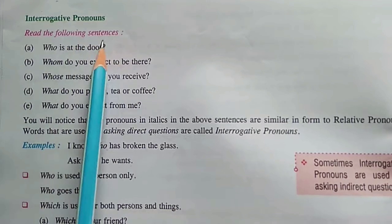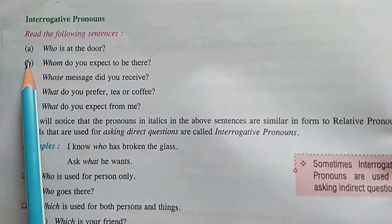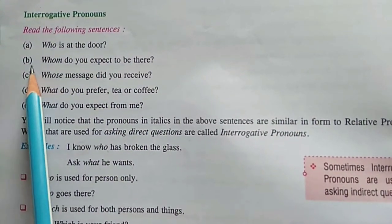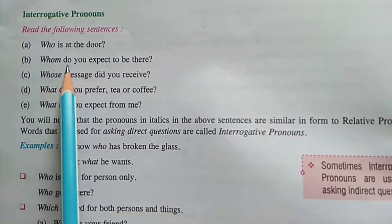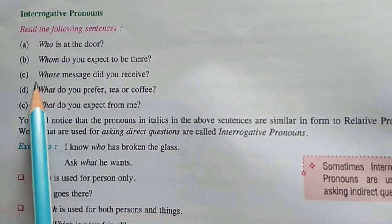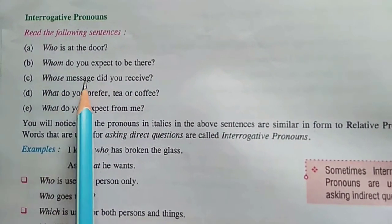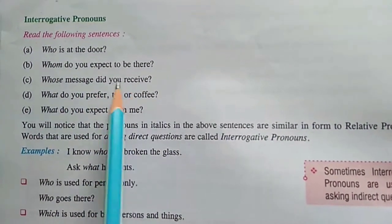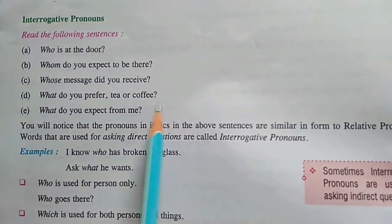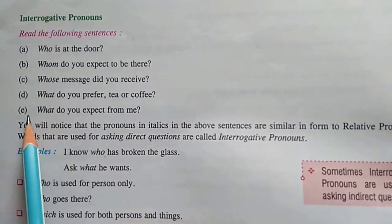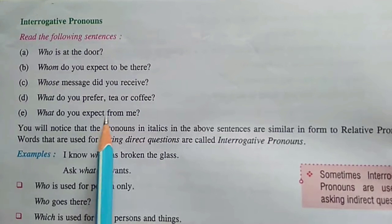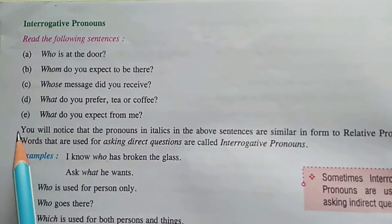Read the following sentences. A: Who is at the door? B: Whom do you expect to be there? C: Whose message did you receive? D: What do you prefer, tea or coffee? E: What do you expect from me?